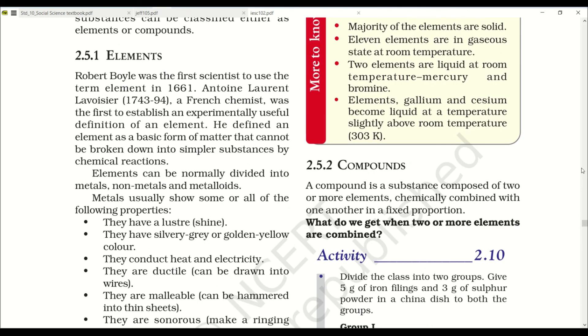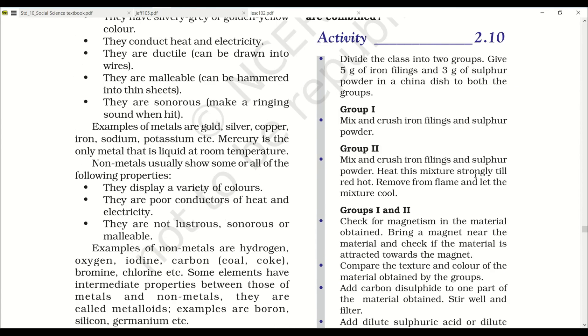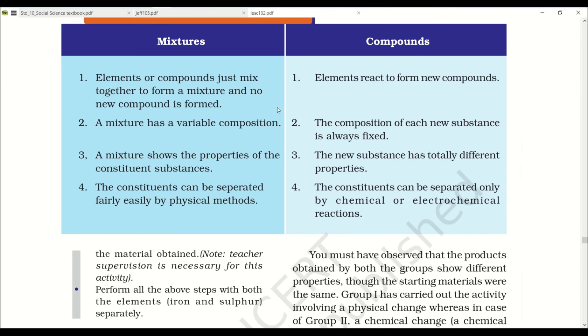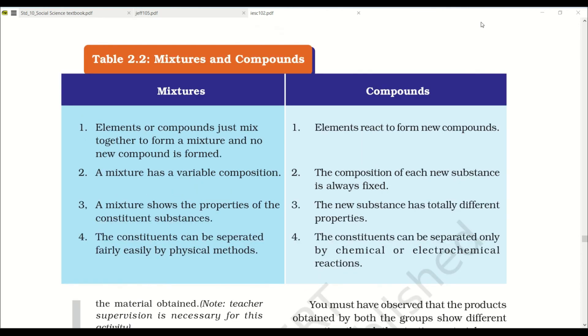Another type of pure substances are compounds. A compound is a substance composed of two or more elements chemically combined with one another in a fixed proportion. Example: water. Water is a compound. These are the differences between mixtures and compounds. Mixtures and compounds are totally different. Elements or compounds just mix together to form a mixture and no new compound is formed. So in a mixture, no new substance is formed. While in compounds, elements react to form new compounds.